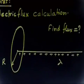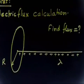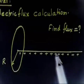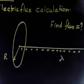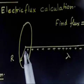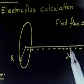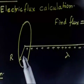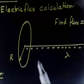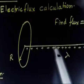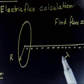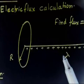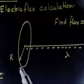Let me read the language of the problem. A very long uniformly charged thread is oriented along the axis of a circle of radius R. So this is a very long thread, and I can assume this goes up to infinite on both sides, with one end at the center of the circular area. The radius of this circular area is capital R, and the charge of thread per unit length is equal to lambda. Find the flux that passes through the cross-sectional area of the circuit.